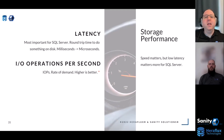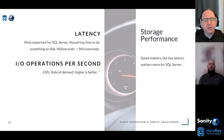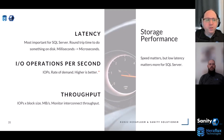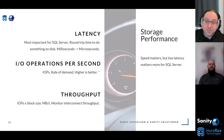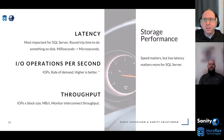I'm not discounting IOPS — higher is always better — but think of it like a vehicle with a 240 mph speedometer that you're just using to get groceries: it's a waste. I need the peaks to be higher than what I'm asking of it, but what I really care about is zero to 60 — that's latency. Throughput is basically IOPS times block size, measured in megabytes per second. Monitor to ensure your interconnects aren't getting saturated and that demand doesn't exceed what the storage is capable of, then hone in on latency.